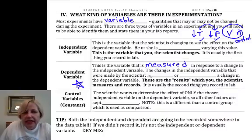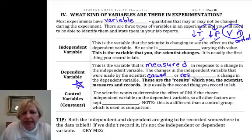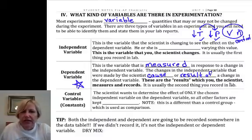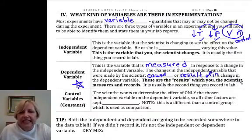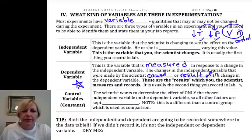So it is the result of changes in the independent variable that were made by the scientists. Changes in the independent variable result in a change in the dependent variable. So those are your final results. It's a measurement.